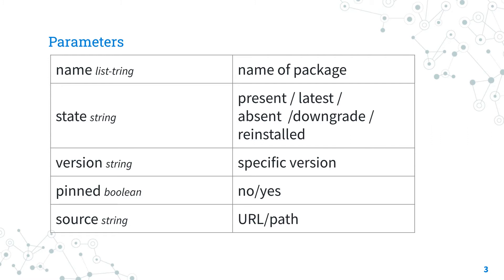If you would like to install a specific version you can specify it in the version parameter. The state parameter specifies the action you would like to perform on the target system. For installation, use present or latest to ensure you have the latest package installed on the target machine.